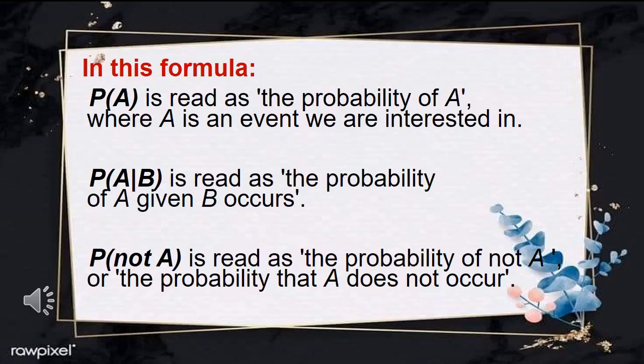In this formula, P of A is read as the probability of A, where A is an event we are interested in. P of A given B is read as the probability of A given B occurs. P of not A is read as the probability of not A, or the probability that A does not occur.